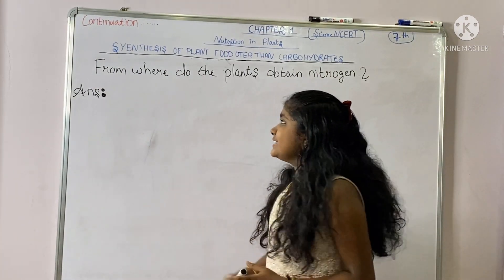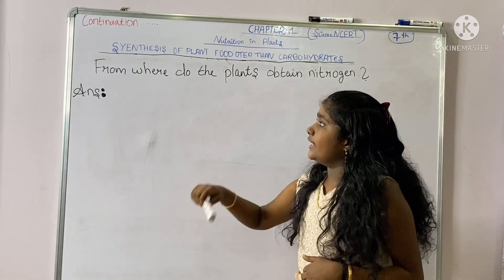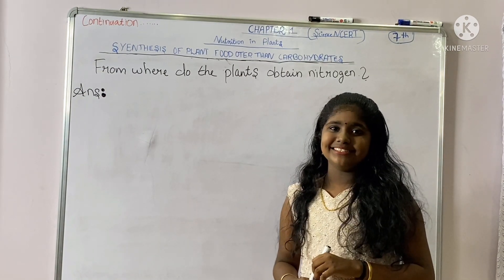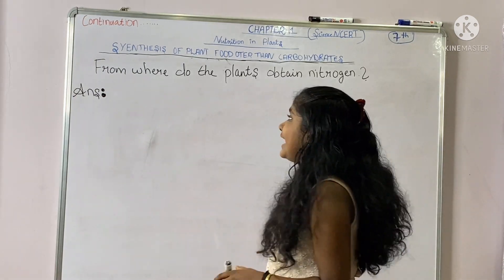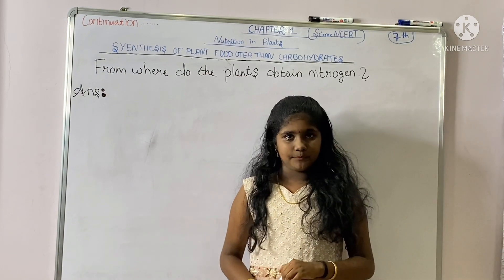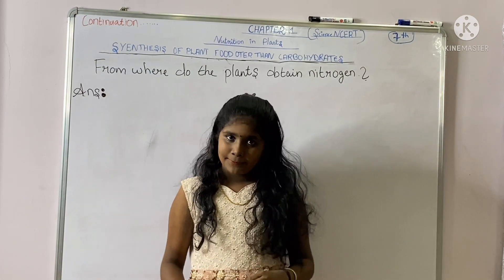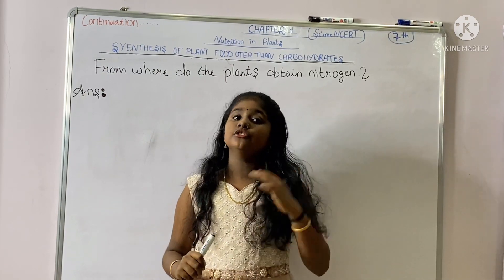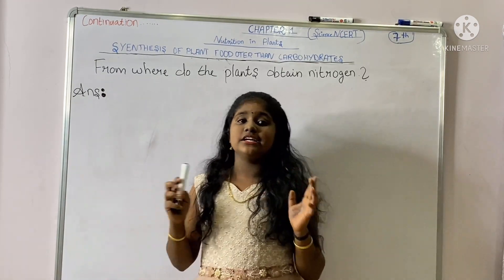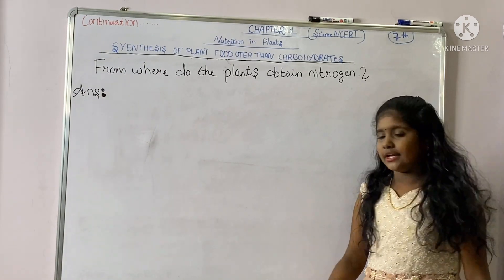Now a question: from where do plants obtain nitrogen? We all know that nitrogen is present in abundance in gaseous form in the air. But plants cannot take nitrogen in this gaseous form. So what happens? The soil has certain bacteria that converts gaseous nitrogen into a soluble or usable form.